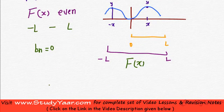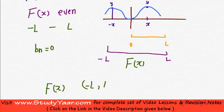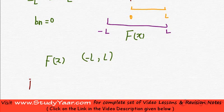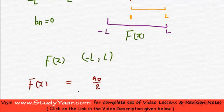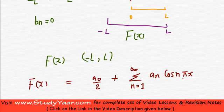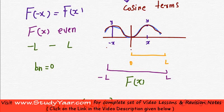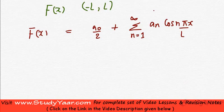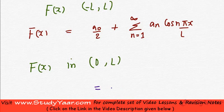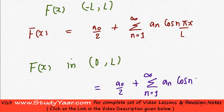And now if I were to get the Fourier series of this even function between minus l to l, I know that it's going to have only cosine terms because bₙ is equal to 0 in that case. Therefore, your Fourier series for F(x) in minus l to l is equal to a₀ by 2 plus summation n equals 1 to infinity aₙ cos(nπx/l).